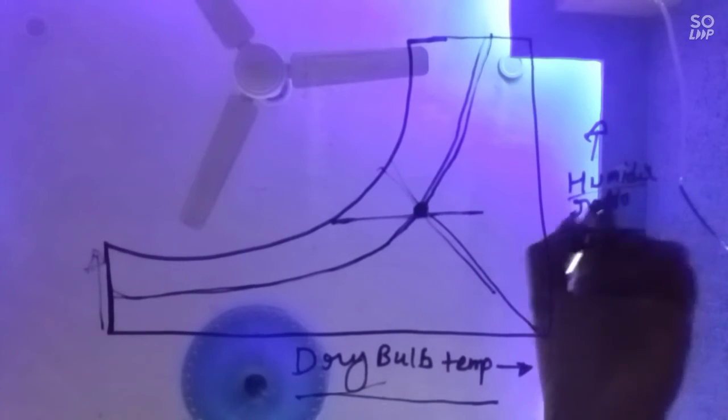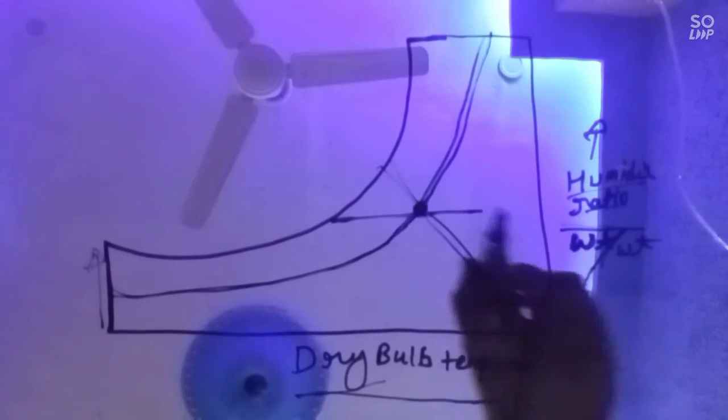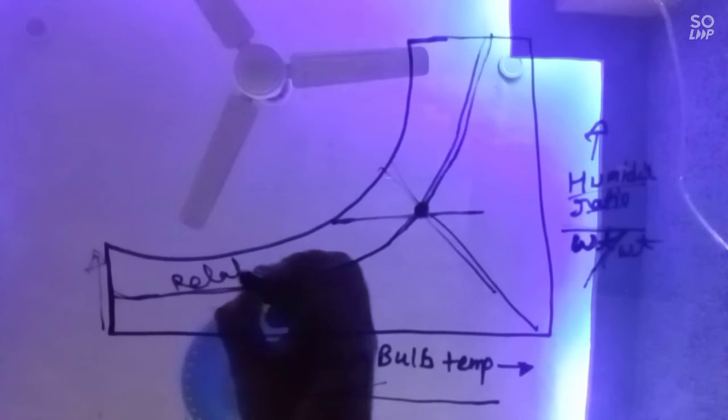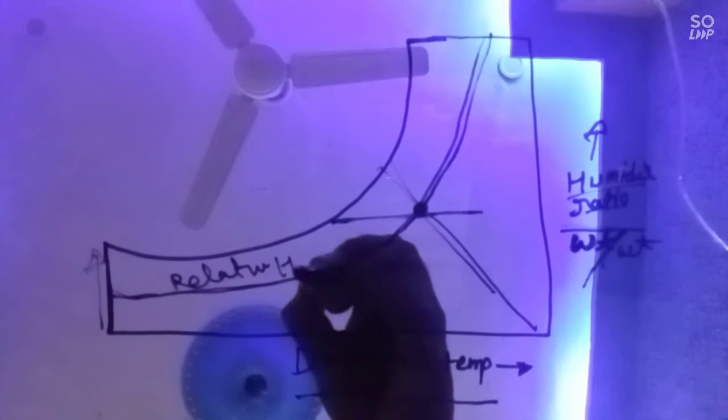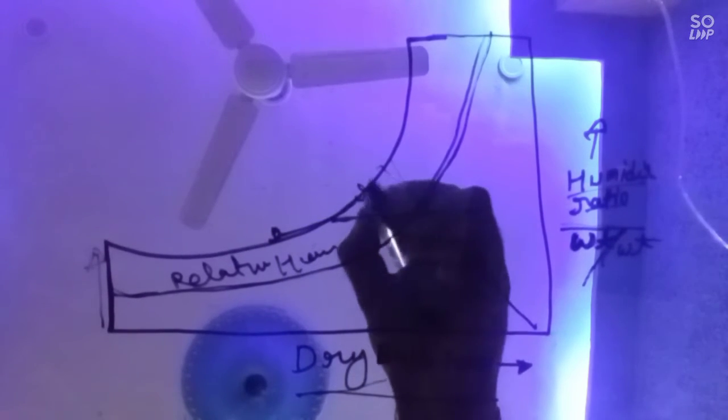Humidity ratio is the ratio of the weight of moisture and the weight of dry air. And this is a relative humidity line. Relative humidity at this point, at this line, is a maximum 100%.